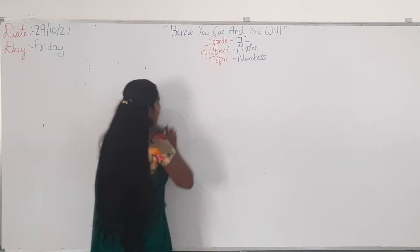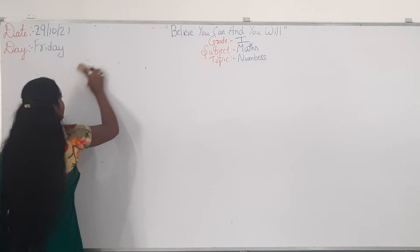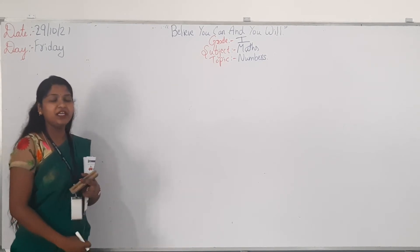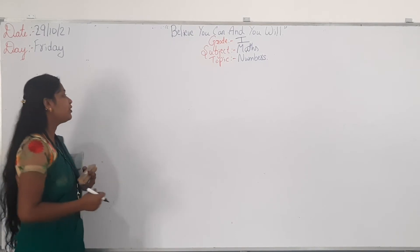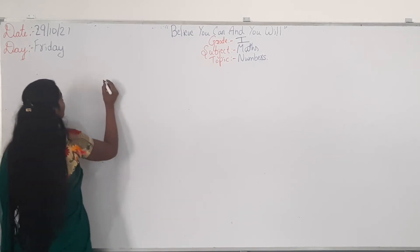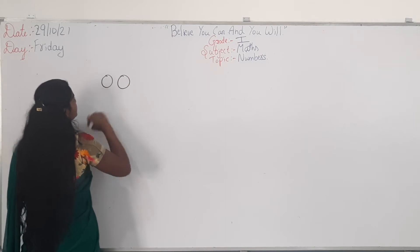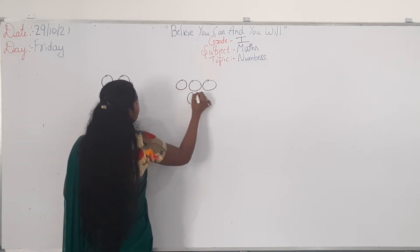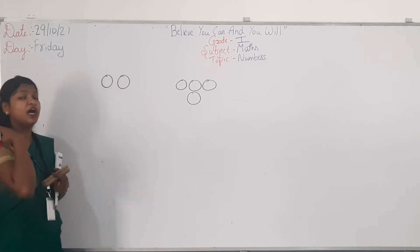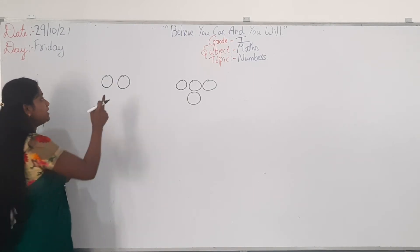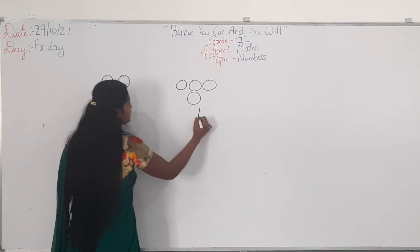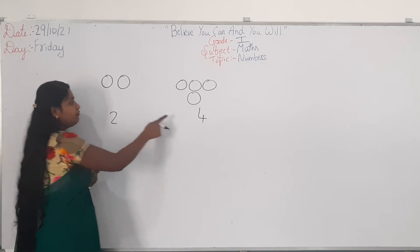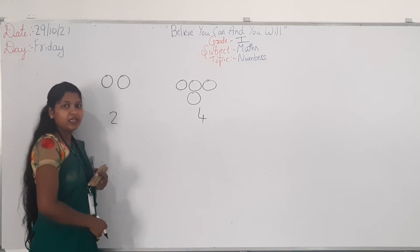The next topic is how to compare numbers. We have to check which is smaller. For example, here you have two balls and here you have four balls. Which group has more balls? Two is less, and four is more.